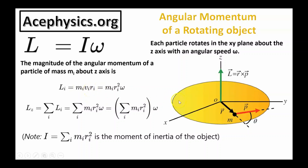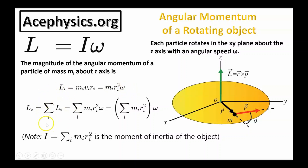For a rotating object, the linear momentum and radius are always at a 90-degree angle, and sine of 90 is equal to 1. For a rotating object, V is equal to R omega. The angular momentum of each mass element is MVR, which is equal to MR squared omega.